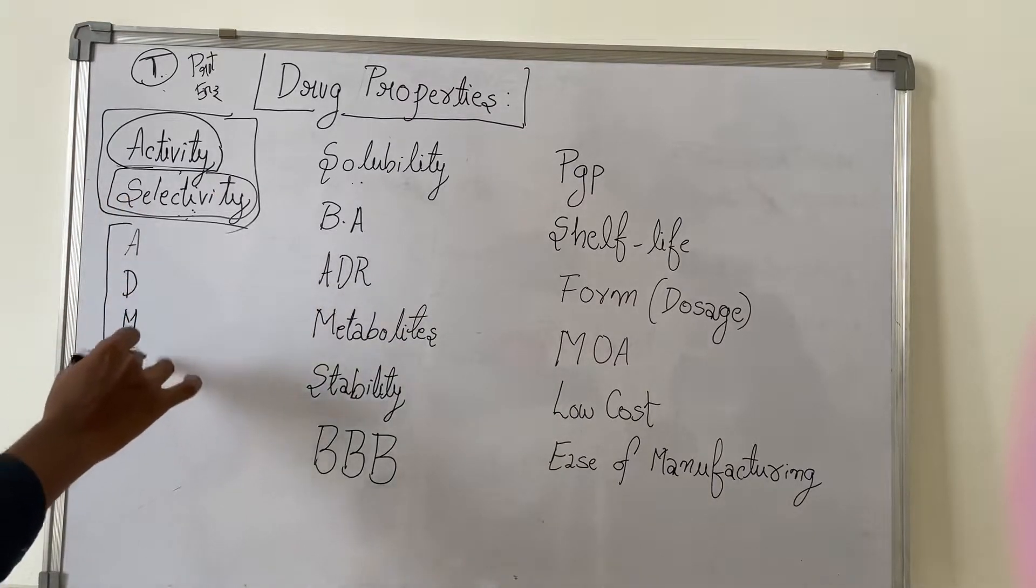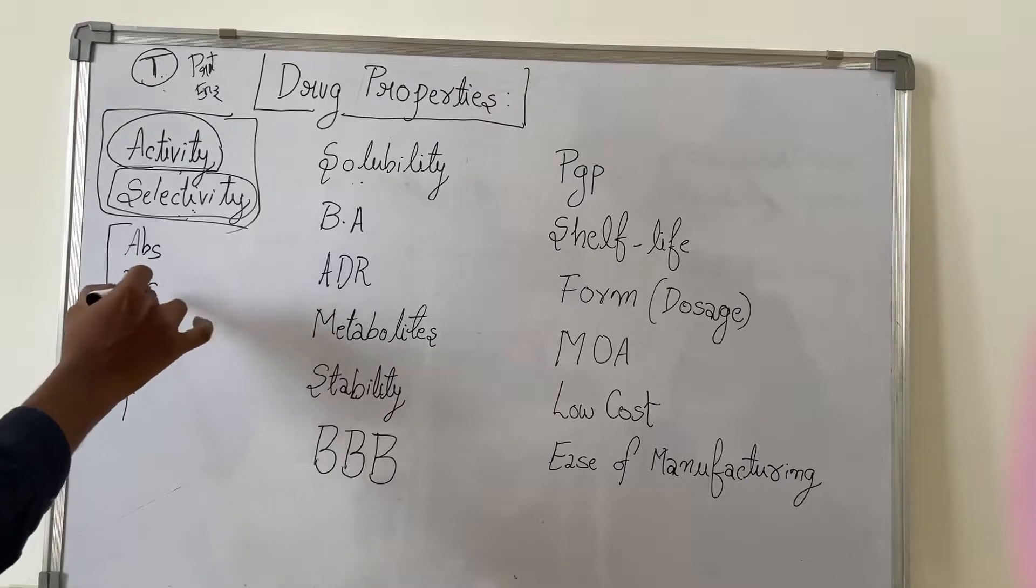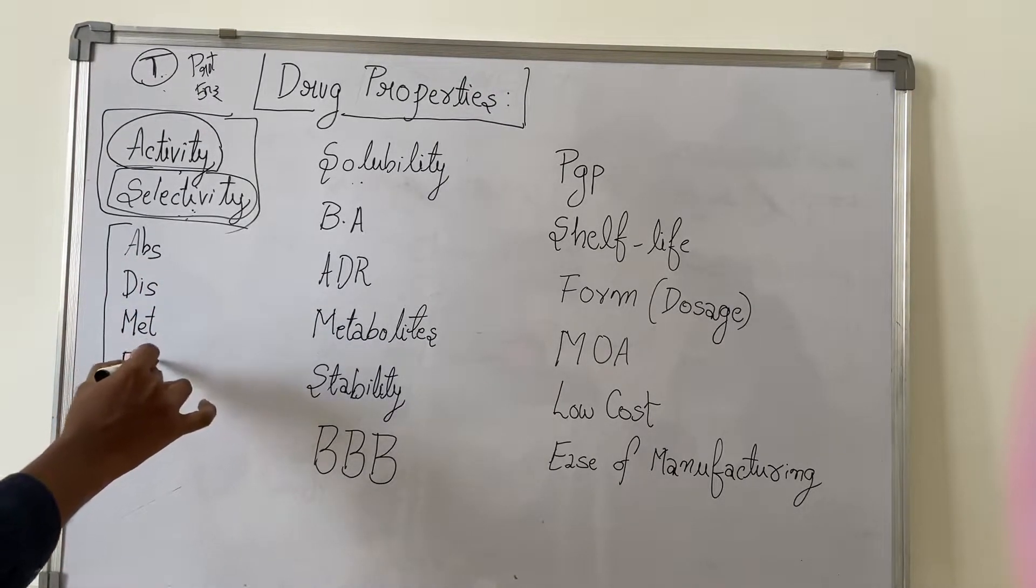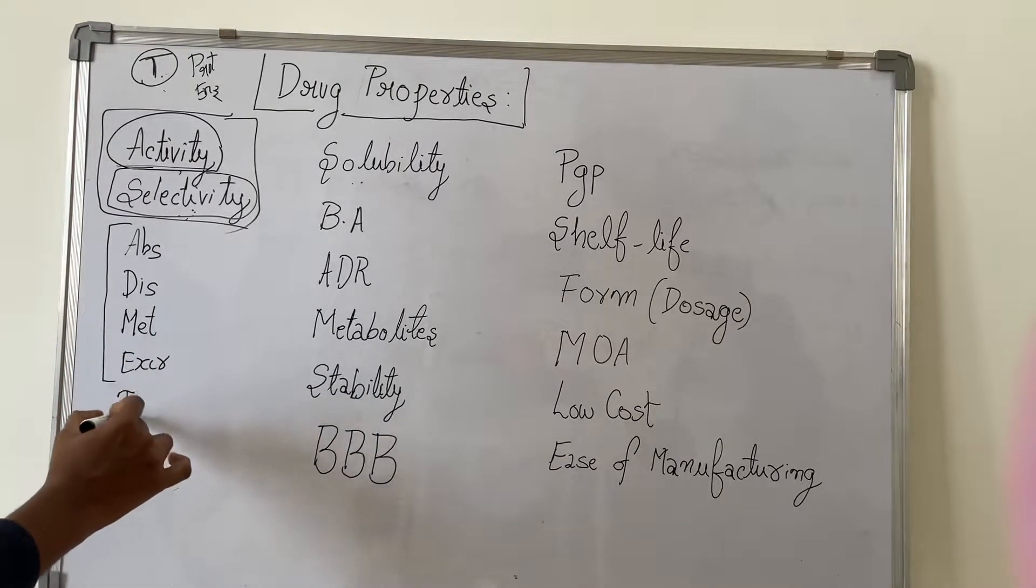After the solubility, we will consider these four parameters which are very important. First one is absorption, second is distribution, third is metabolism, fourth one is excretion. Recently, one more parameter is also being checked: toxicities.